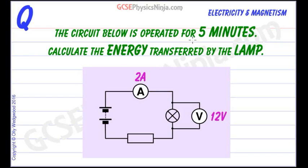The circuit below is operated for five minutes. Calculate the energy transferred by the lamp. We have a series circuit with a circuit loop. Here's our power supply. We have an ammeter measuring two amps flowing in this circuit, and across the lamp we have a voltmeter measuring a potential difference of 12 volts. We've also got a resistor in this circuit but that's not playing any part in the calculation.